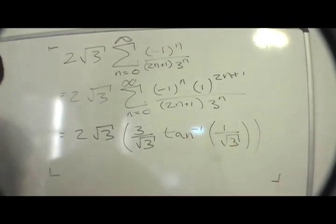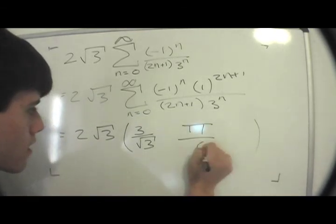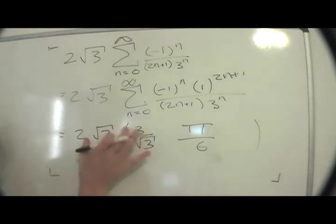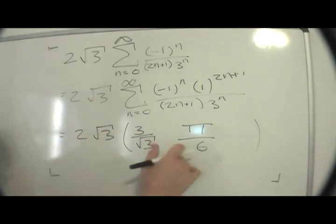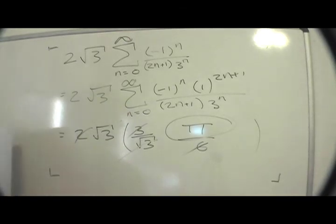So I can replace this, this is pi over 6. So what do we have? Well, 2 times 3 is 6 divided by 6, cancels. Radical 3, radical 3, cancels. What we're left with is pi. Happy Pi Day.